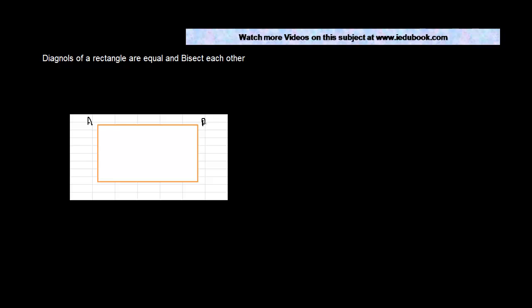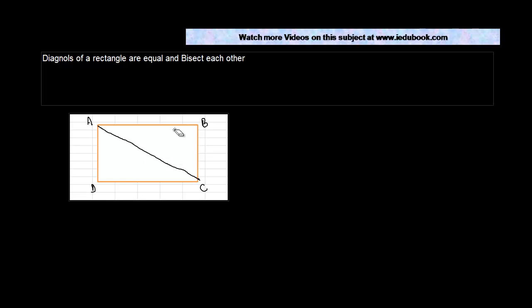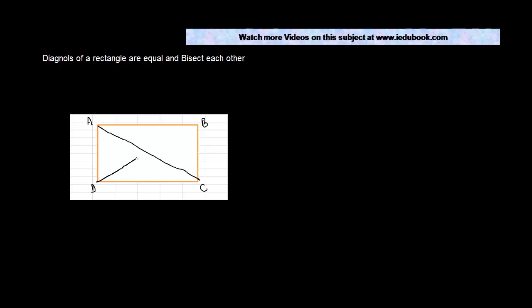The diagonals of a rectangle are equal and bisect each other. Let us take the rectangle in the picture and call it ABCD. Let's draw the diagonals of this rectangle as well. Let the point of intersection be called point M.